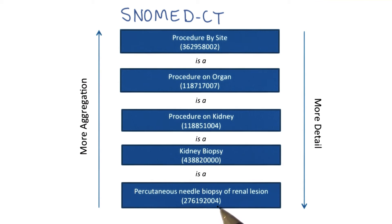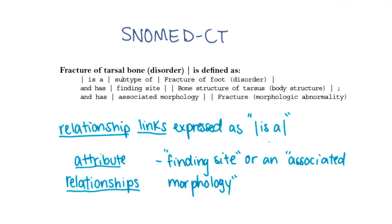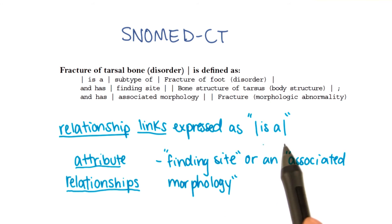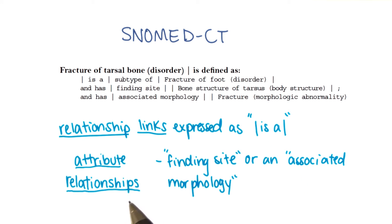We go from least detail — the concept of a procedure at some site in the body — all the way to a very specific procedure done at a very specific location. This illustration shows other basic components of SNOMED-CT: relationship links, which are expressed using IS-A, and attribute relationships, which are a finding site or an associated morphology.